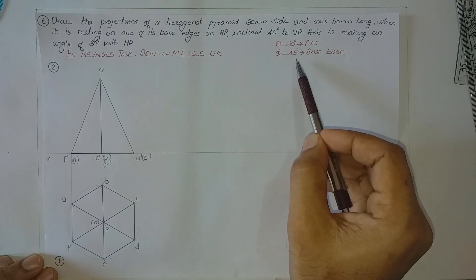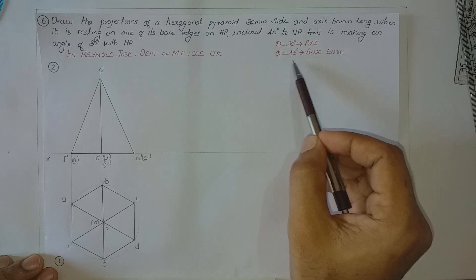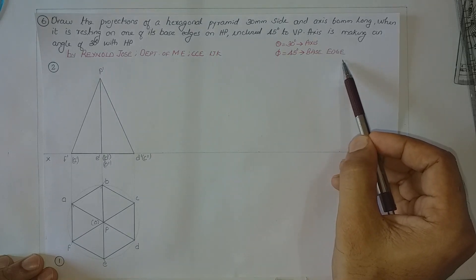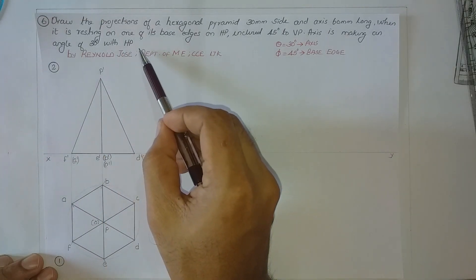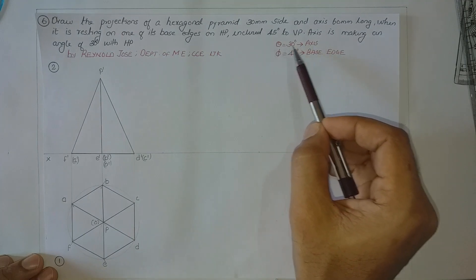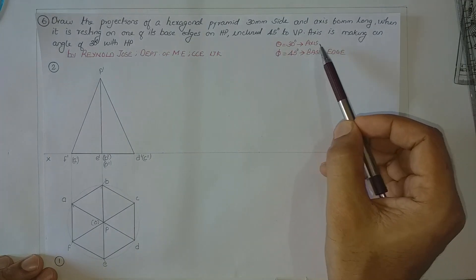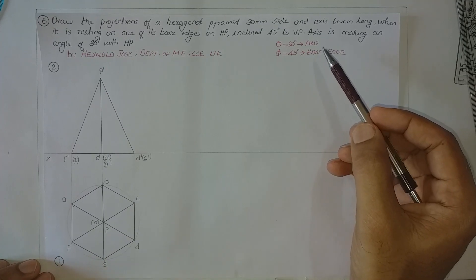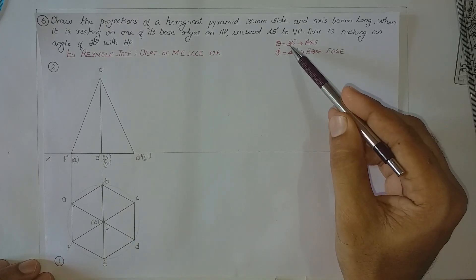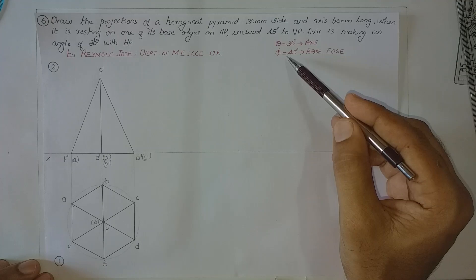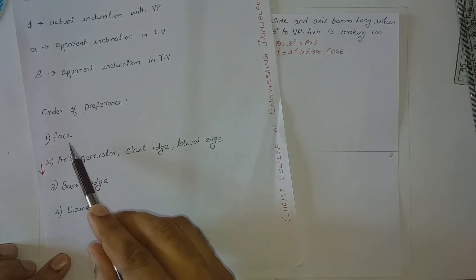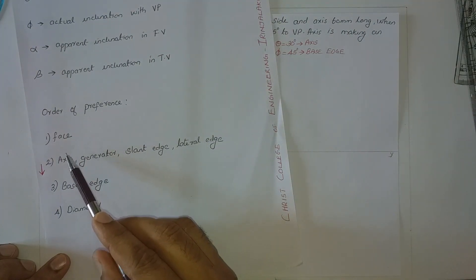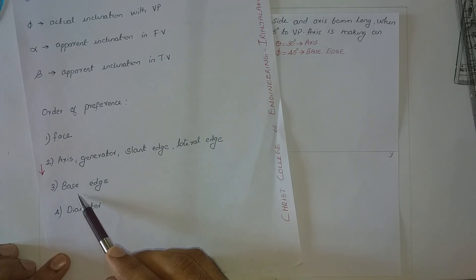Phi is 45 degrees and this inclination is for the base edge on which it is resting. The axis is making an angle of 30 degrees with HP, so theta is 30 degrees and it is for the axis. We have two inclinations — theta and phi — and we have to decide which inclination to give first. Inclination with respect to the face is not mentioned, but inclination with respect to the axis and base edge are both mentioned.